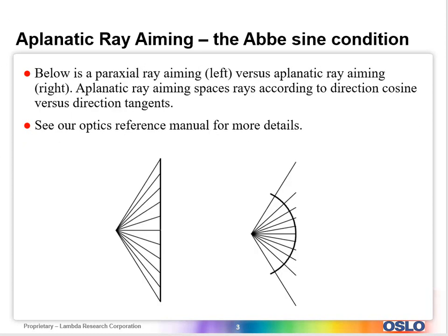So what is this exactly? Well, on the left I'm showing for a given field point what paraxial ray aiming would actually do.